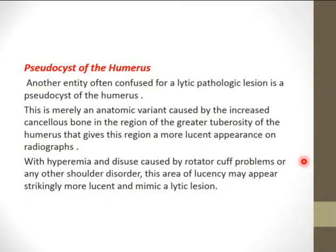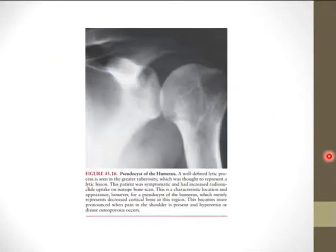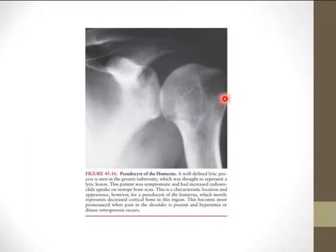Pseudocyst of the humerus is another entity that should not be confused with lytic pathologic lesions. It is merely an anatomic variant caused by increased cancellous bone in the region of the greater tuberosity of the humerus, giving this region a more lucent appearance on radiographs. With hyperemia and disuse caused by rotator cuff problems or any shoulder abnormality, this area of lucency might appear strikingly more lucent and mimic a lytic bone lesion. No biopsy is needed.